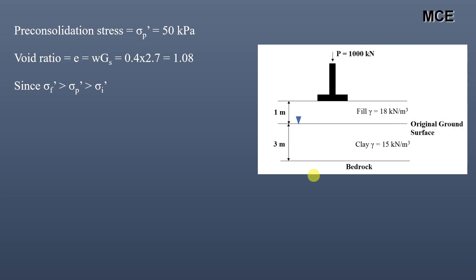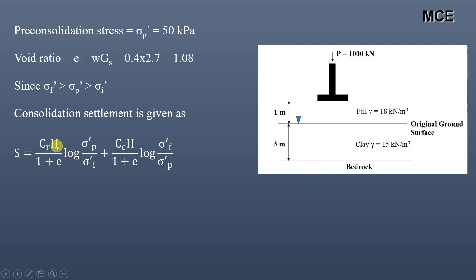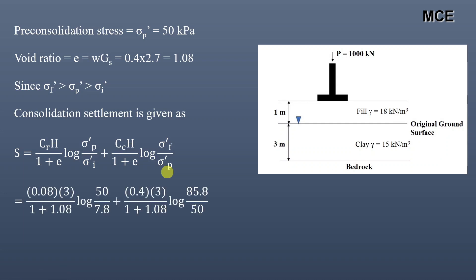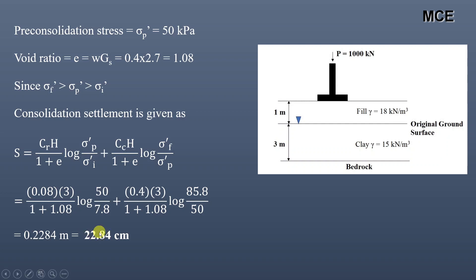Since the final effective stress (85.8 kPa) is greater than the pre-consolidation stress (50 kPa), which is greater than the initial effective stress (7.8 kPa), the consolidation settlement is given by: s = [Cr × H / (1 + e)] × log(σ'p / σ'i) + [Cc × H / (1 + e)] × log(σ'f / σ'p). Substituting all values, the consolidation settlement equals 0.2284 meters, which is 22.84 centimeters — the consolidation settlement due to stress increases from both the fill and the footing, under the center of the footing.